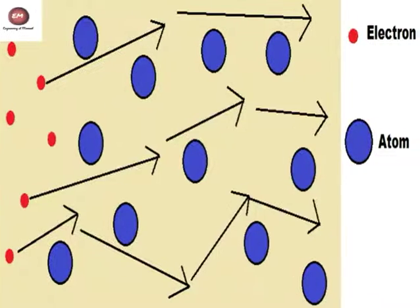In the same way, when electrons flow in an electric circuit, they encounter resistance due to atoms. And this is what electrical resistance is.